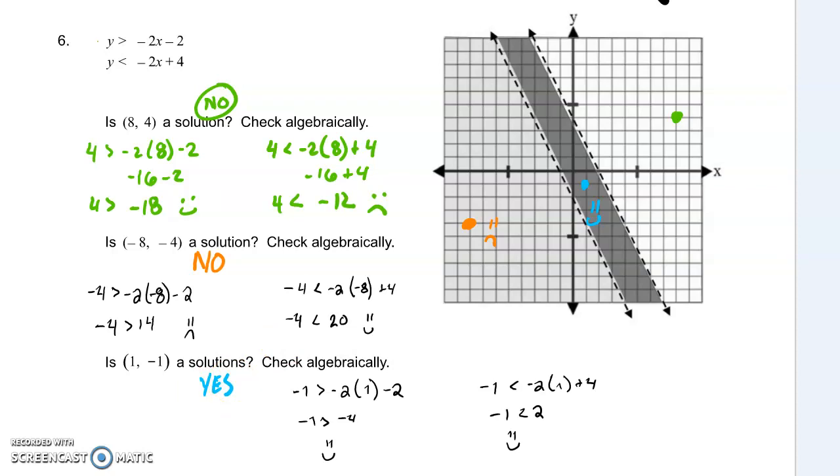So algebraically, we can see it's not a solution, it is a solution. So that's a no. Any no is a no. But for 1, negative 1, it is, and it is. Two yeses makes it a yes.